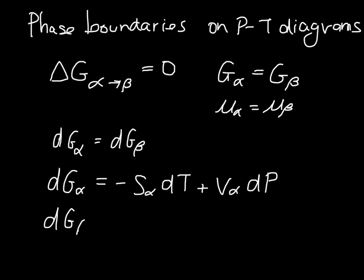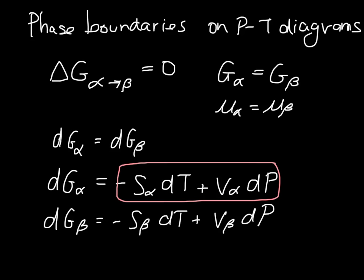So DG beta we can write in the same way. Now we know that this expression here has to be equal to this expression down here, because of this.